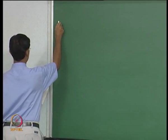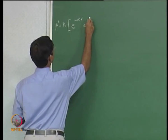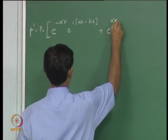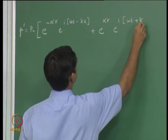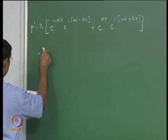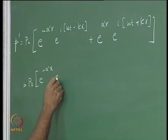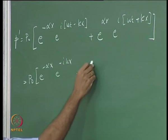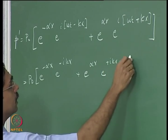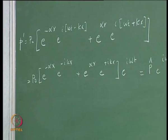Putting together we will get p prime equal to p naught times e to the power minus alpha x, e to the power i times omega t minus k x. This was the right running wave, plus e to the power alpha x, e to the power i times omega t plus k x. We will expand it for convenience: p naught times e to the power minus alpha x, e to the power minus i k x, plus e to the power alpha x, e to the power plus i k x, times e to the power i omega t, which we can say is p hat e to the power i omega t, where p hat is the complex amplitude.